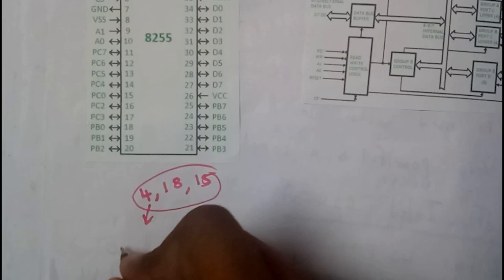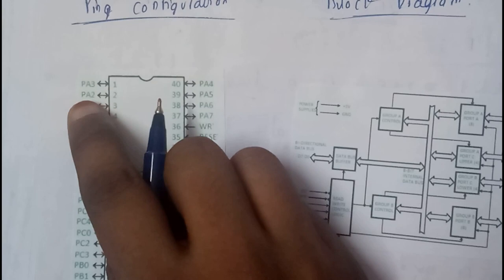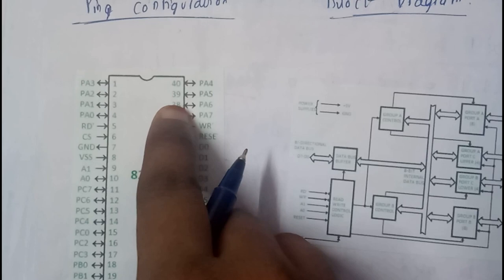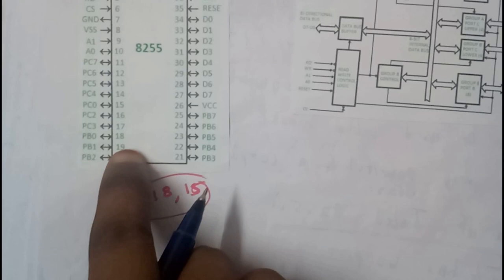So at pin 4, start writing PA0 and write it in the up direction. That is nothing but PA0 at 4, PA1 at 3, PA2 at 2, PA3 at 1, PA4 at 40, PA5 at 39, PA6 at 38, PA7 at 37. So we are done with this U shape now.